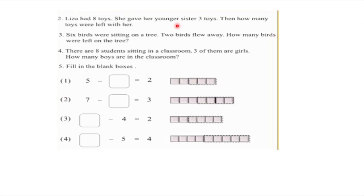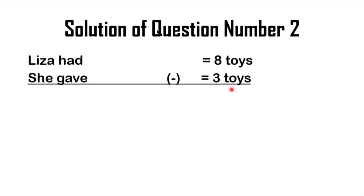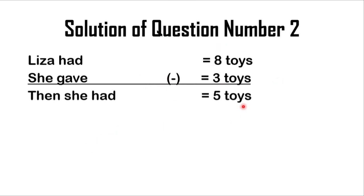So how can we solve and summarize this question? Let's go to the board. In the first line you should write that Lisa had 8 toys. Then she gave 3 toys. Because the number of toys will be decreased, this will be a subtraction problem. In the final line you should write that then she had 5 toys. You know that 8 minus 3 is equal to 5, and that's why you write 5 here.